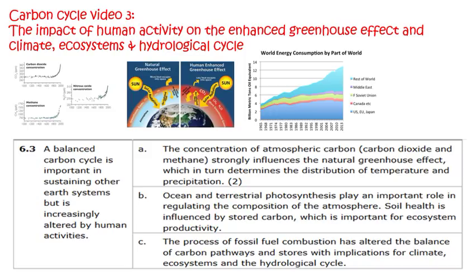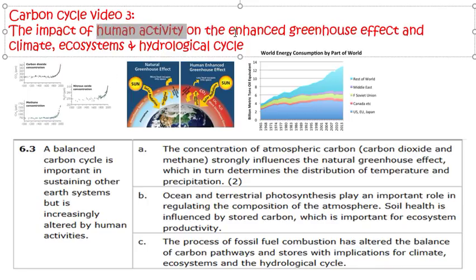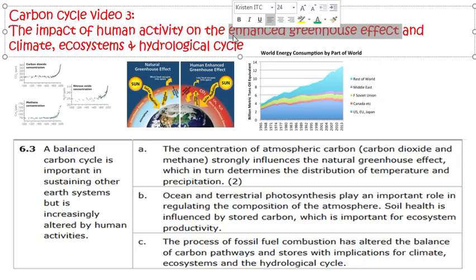Geographers, hello. Third carbon cycle video. What is it all about then? Basically, it's about how human activity affects the natural greenhouse effect, and we cause the enhanced greenhouse effect, and then how that has an effect on the climate in different parts of the world, its impact on different ecosystems that are particularly vulnerable, and also the water cycle. So it's like synoptic link heaven - this part of the course links to loads of different parts of the course synoptically.